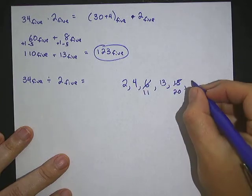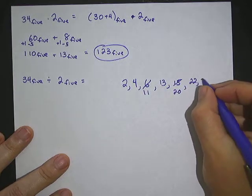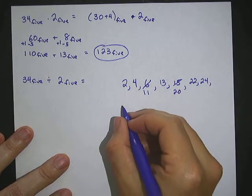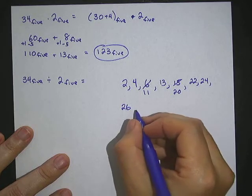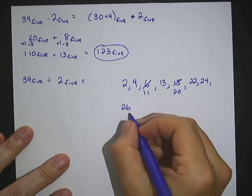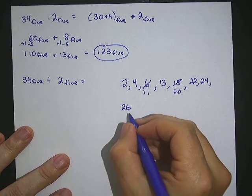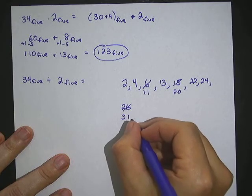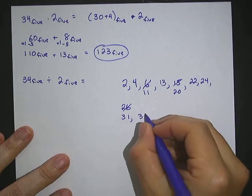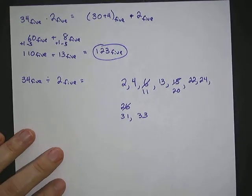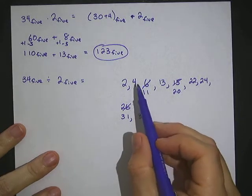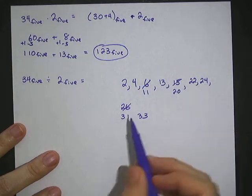We keep adding 2: we get 22, which is fine; then 24 base 5. Next would be 26 base 5, which is too big, so we subtract 5 here and add 1 over here, giving 31. Then we add 2 more to get 33. That's enough, because if we add 2 more it will be 35, which is more than 34. Now we count how many multiples we wrote: 1, 2, 3, 4, 5, 6, 7, 8, 9.